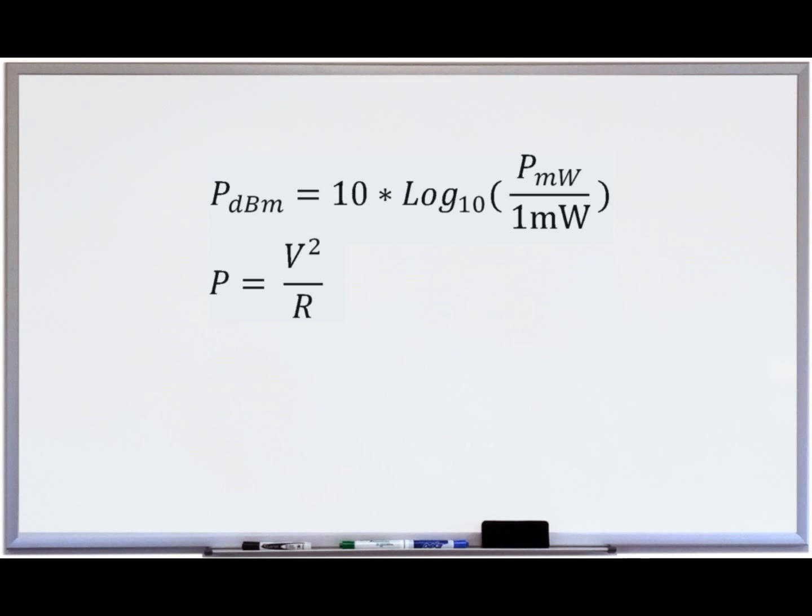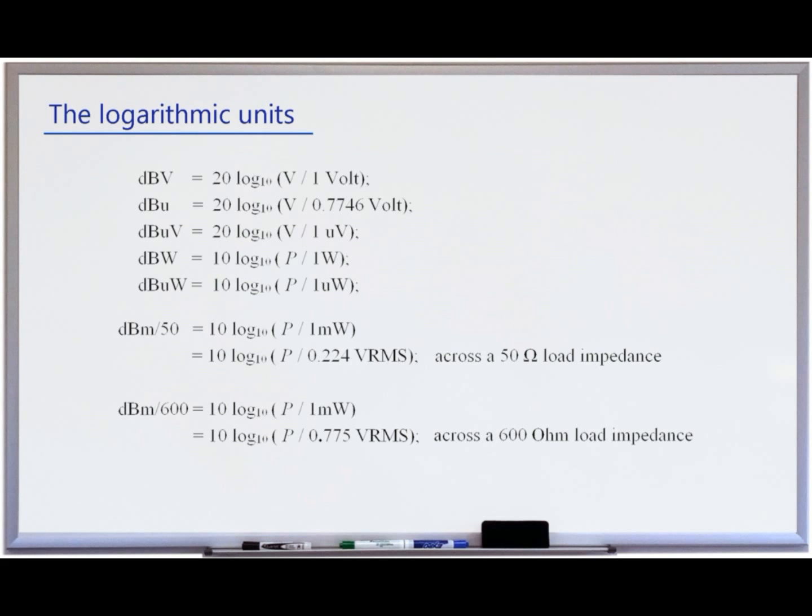Another generally used unit, dBm, is a logarithmic unit of power measured with respect to a 1 milliwatt reference level. Two commonly used units of power in dBs are dBm 50 and dBm 600. These units are used in RF and audio engineering. The 50 stands for the impedance of a 50 ohms coax cable and the 600 indicates the impedance of common telephone cables.